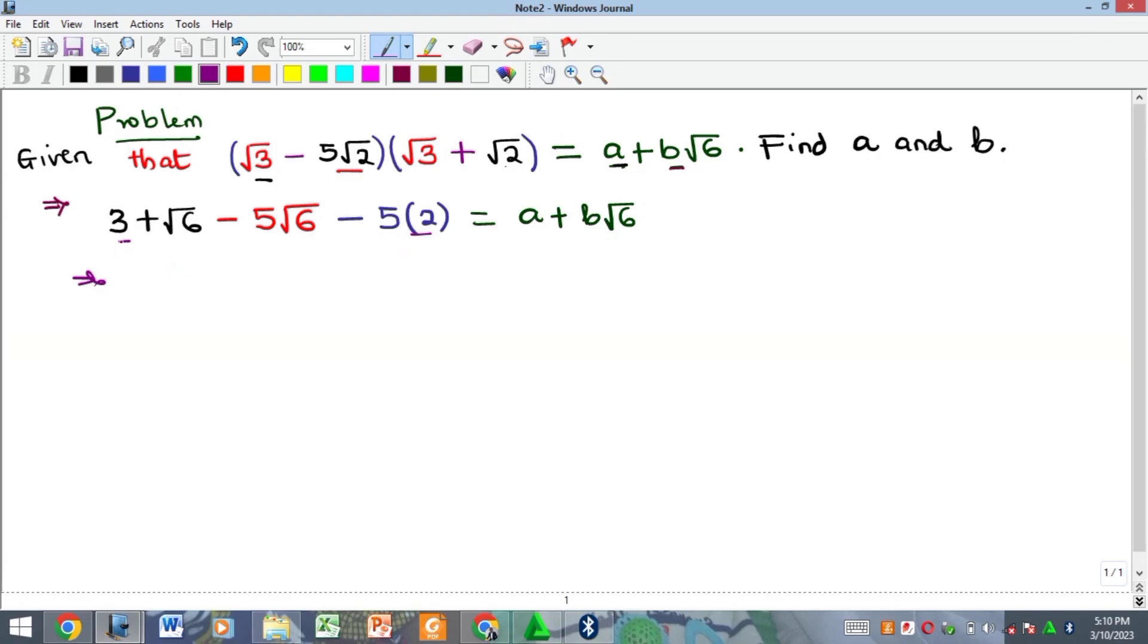3 has no root, so we're going to do 3 minus 5 times 2. 5 times 2 is 10, so 3 minus 10 is going to give us negative 7. Then you have root 6 minus 5 root 6, which is going to be minus 4 root 6.